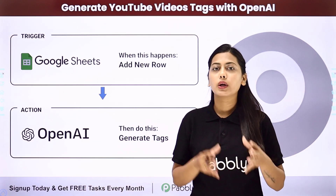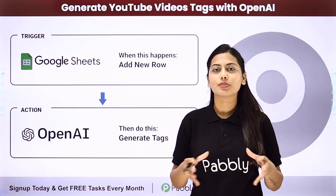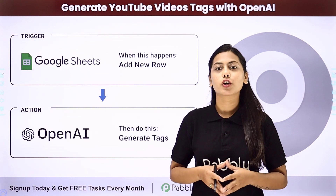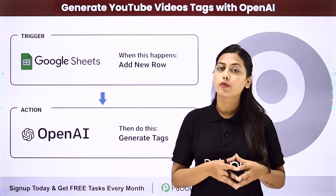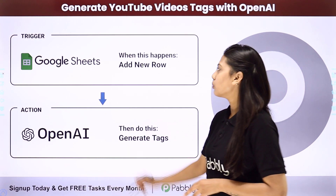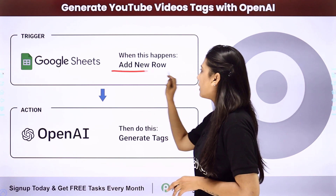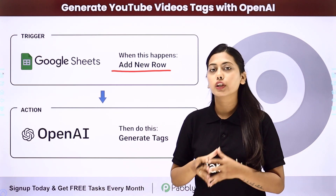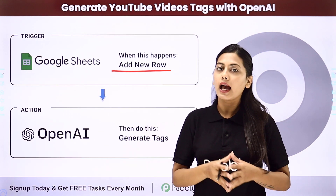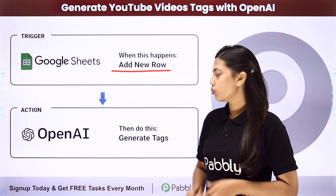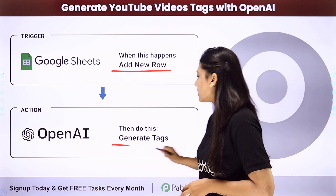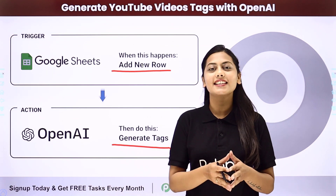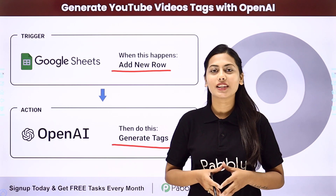Doing that manually one by one is a time-consuming task. Rather, we can create an automation with the help of Pabbly Connect, where our trigger will be adding a new row in Google Sheet about the video content, and our action will be to generate tags with the help of OpenAI. Let us learn how to do that.